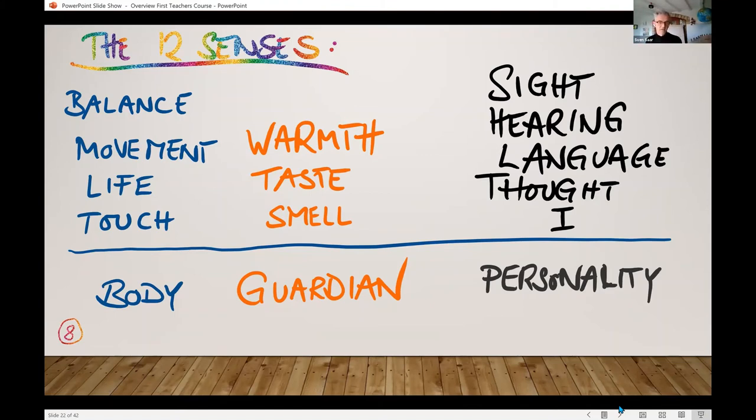This ability to tell whether you're in a good space or not is a conglomeration of various impressions that all come together in what Steiner calls the sense of life. At the other end of the spectrum, there's something he calls the sense of thought.